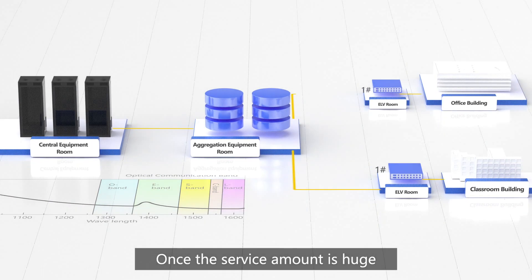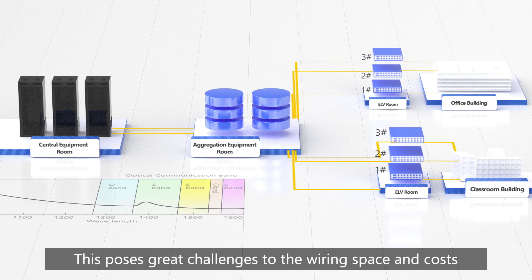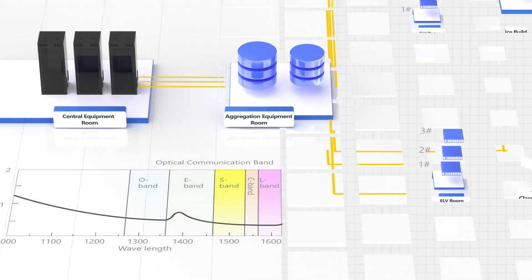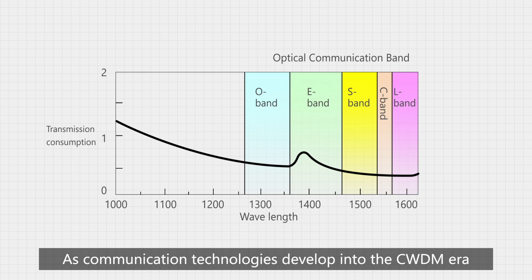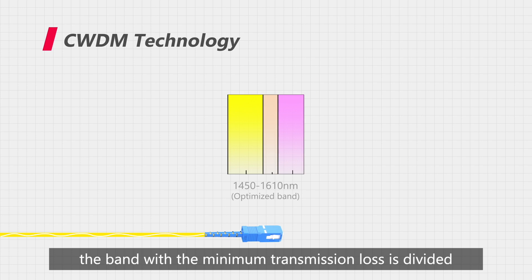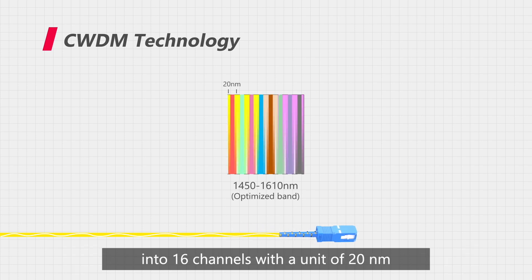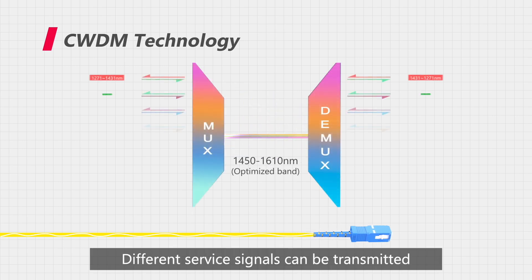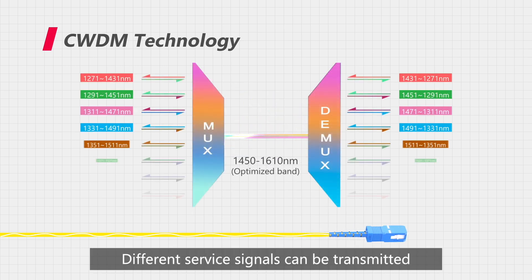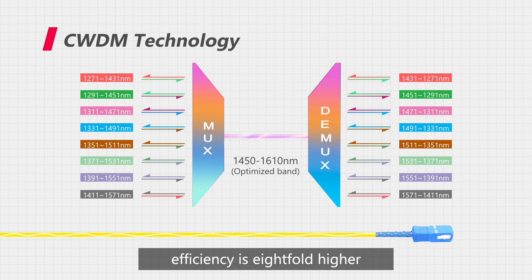Once the service amount is huge, a large number of optical fibers are needed, which poses great challenges to the wiring space and costs. As communication technologies develop into the CWDM era, the band with the minimum transmission loss is divided into 16 channels with a unit of 20nm. Different service signals can be transmitted through one optical fiber, and the transmission efficiency is eight-fold higher.